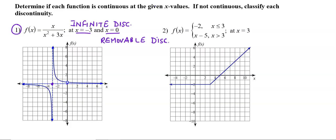Let's come to question number 2. The function is presented differently: f(x) is -2 when x ≤ 3, and it is x - 5 when x > 3.